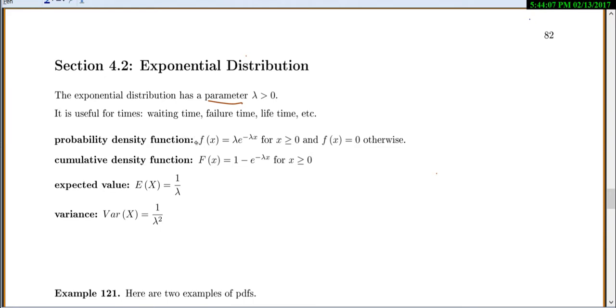You have a probability density function, pdf, f of x equals lambda e to the negative lambda x. x is always greater than 0, which makes sense because you are often modeling time, and time has to be positive. Your cumulative distribution function is there as well. Expected value is 1 over lambda, and variance is 1 over lambda squared.